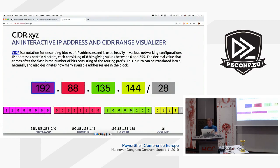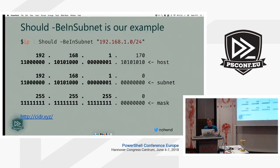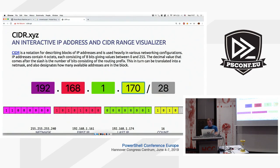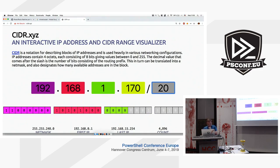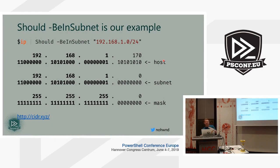In my code I'm supporting just /24, /8, and /16 because I can then split the address on dots and compare the pieces — much simpler implementation that fits on the slides rather than fiddling with bits. If this matches, we consider the address to be in the subnet. For a real implementation you'd use the IP address primitives from .NET, but this is sufficient for the demo.